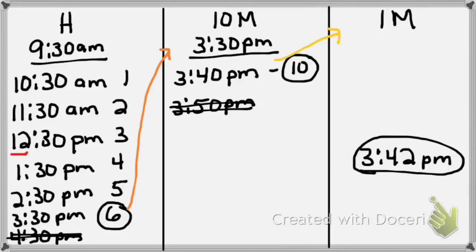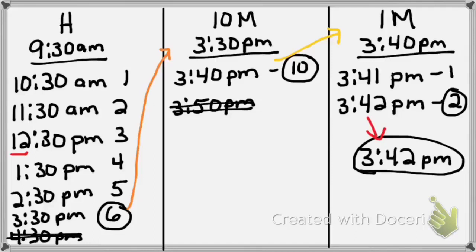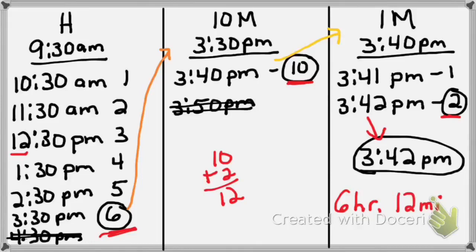I move 3:40 p.m. to the next column, write it, and underline it. Now I count by single minutes until I reach my end time of 3:42. 3:40 plus one minute is 3:41 p.m., plus another minute is 3:42 p.m. — and that is my end time. I have 2 single minutes. My elapsed time is not a clock time, so I should not have a colon. I need hours and minutes: from my columns I have 6 hours, 10 minutes, and 2 minutes — 10 plus 2 is 12 minutes total.